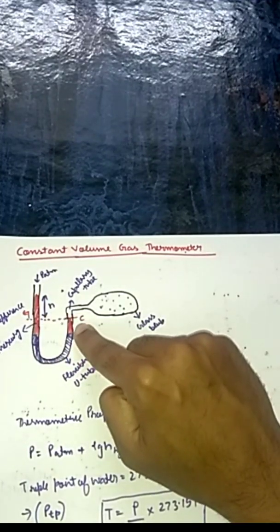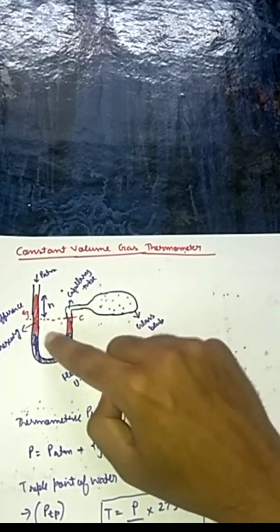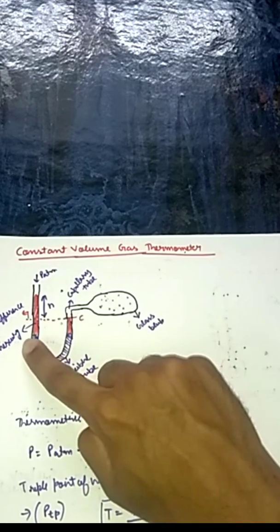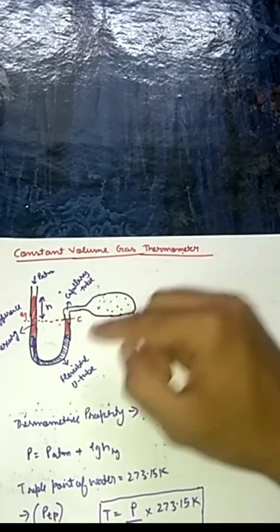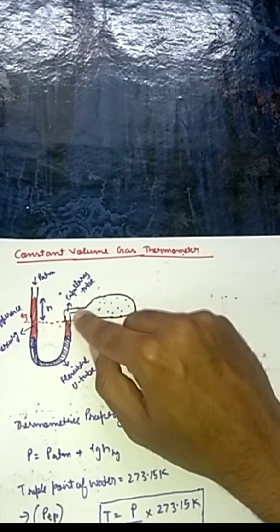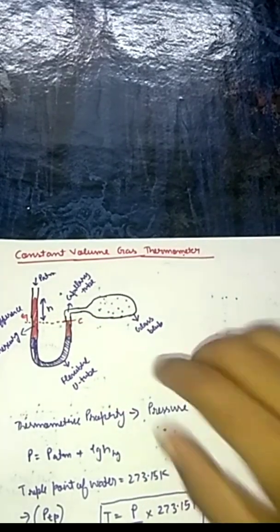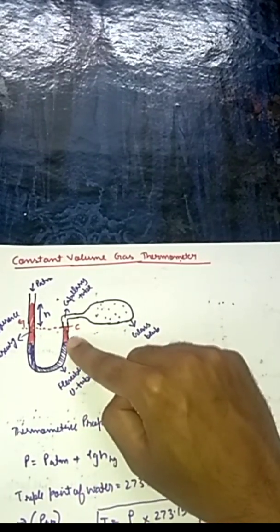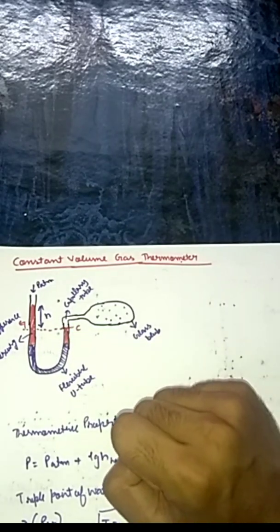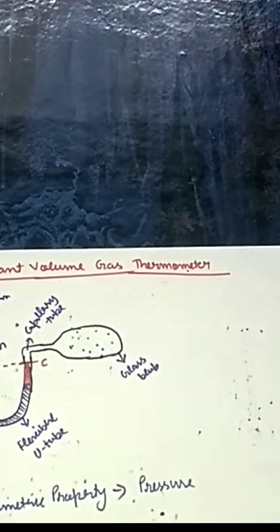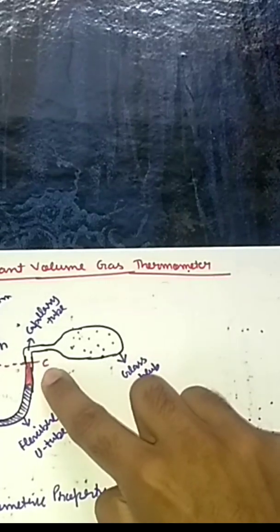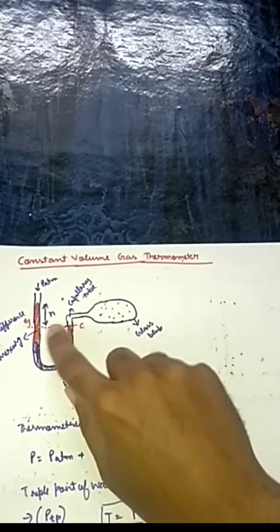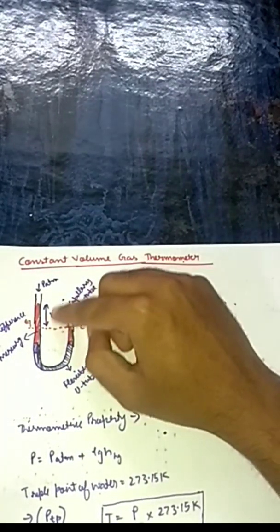The red color marked here is the mercury. The mercury on this side is attached to a flexible tube, and we have a capillary tube after that which connects to the glass bulb. Now note that the mercury will always be at a level up to mark C — it cannot go up or down beyond that point.